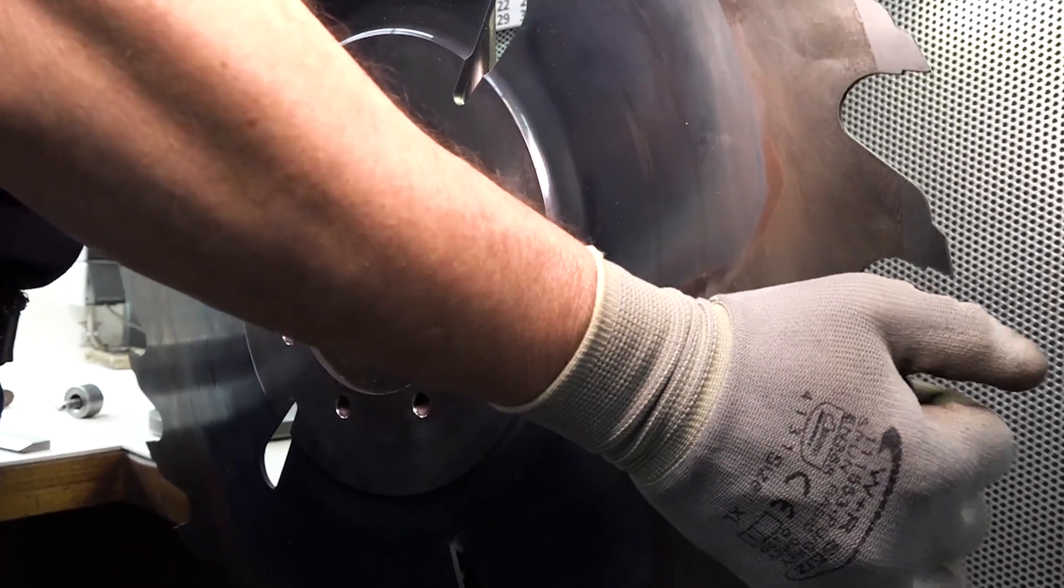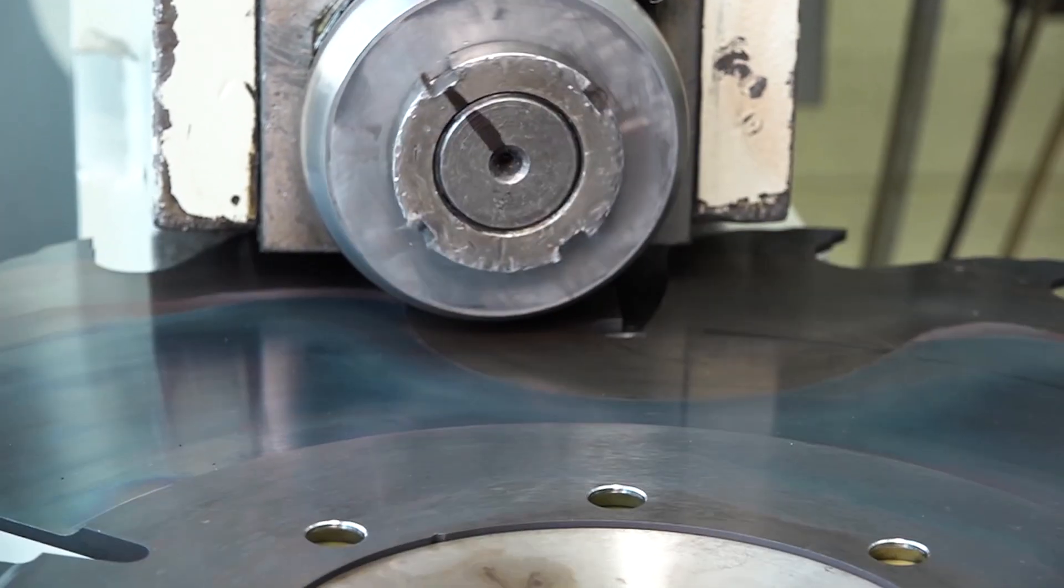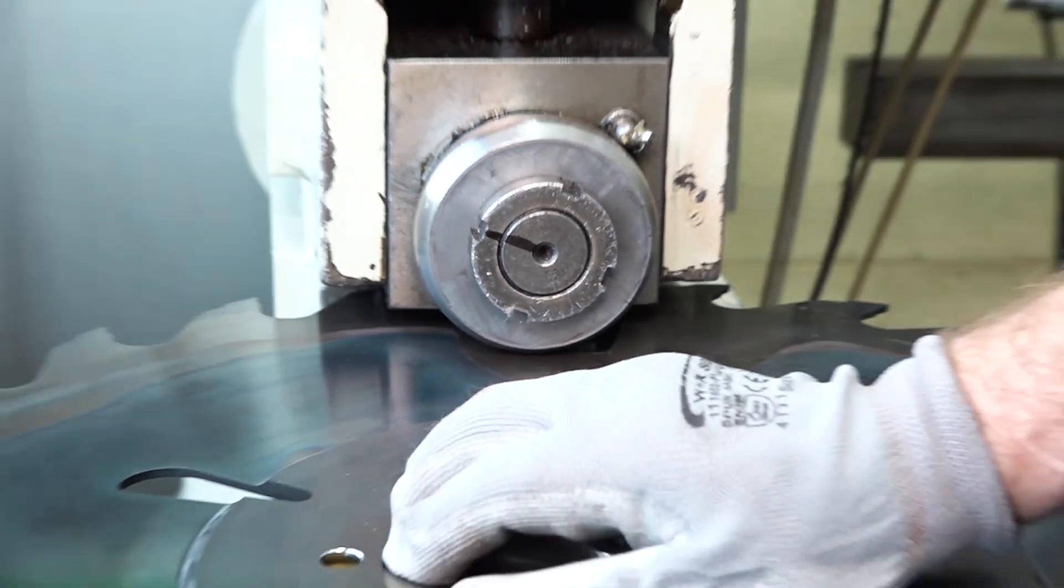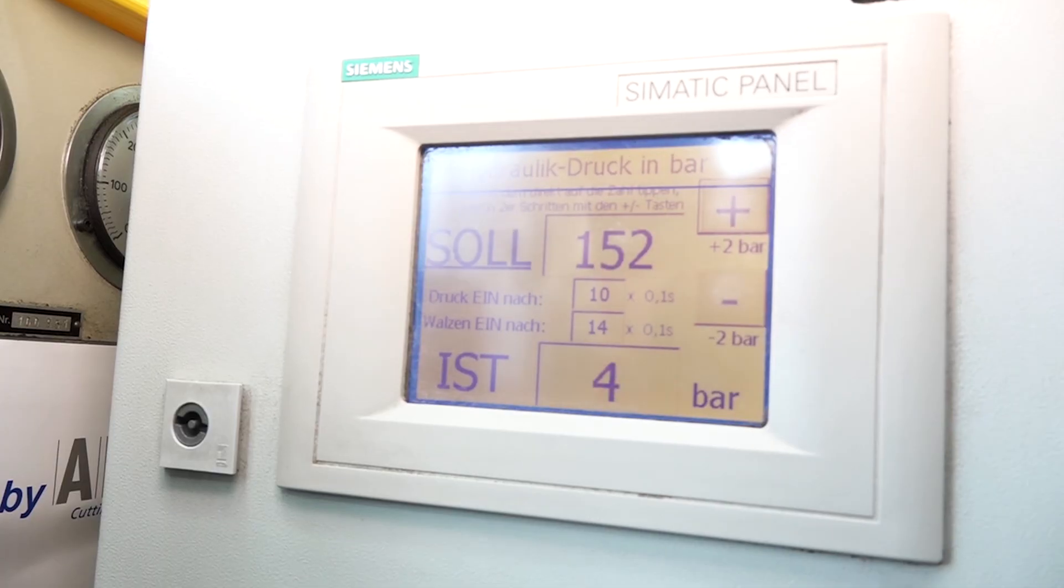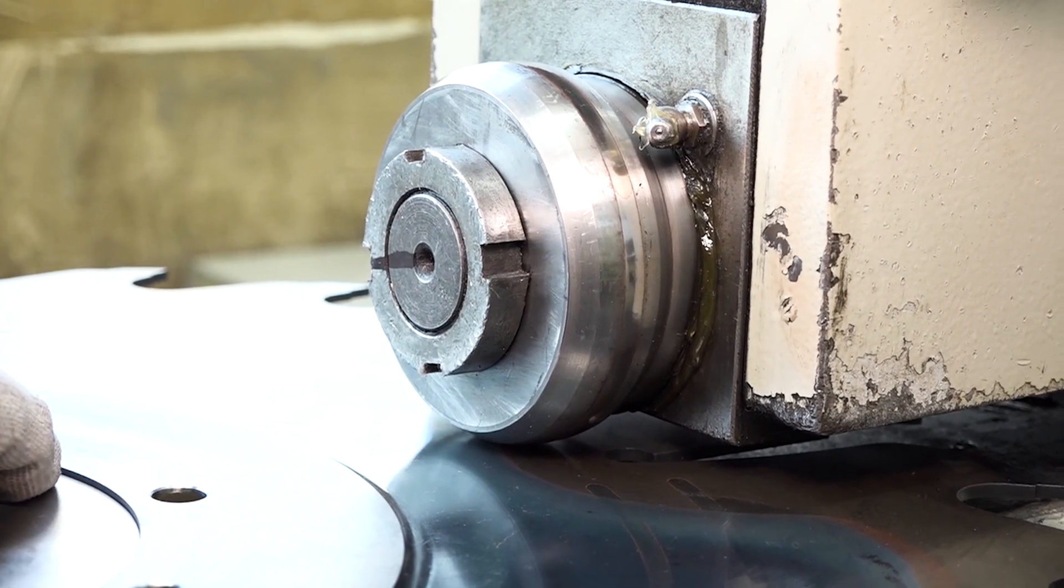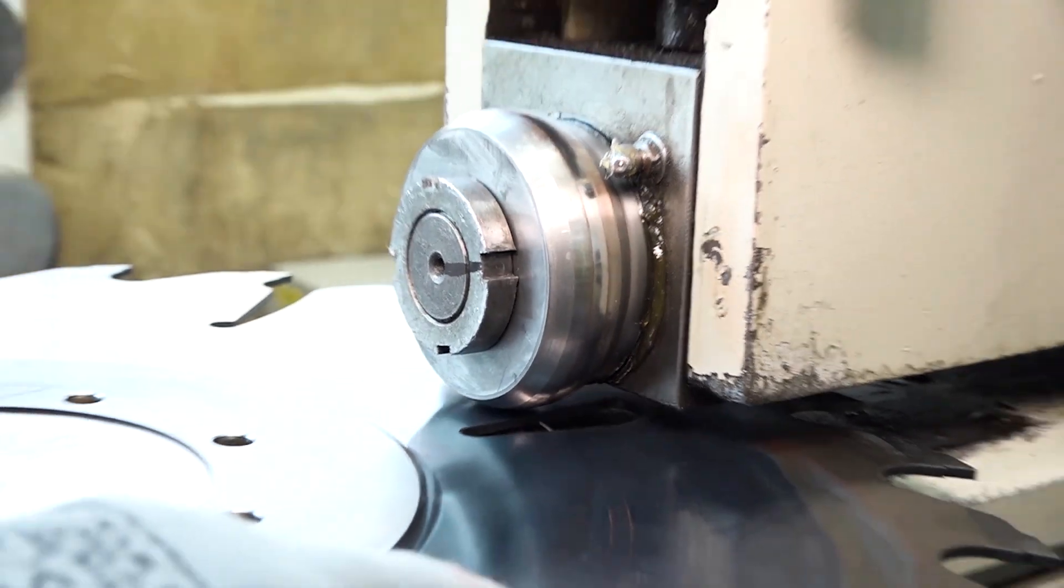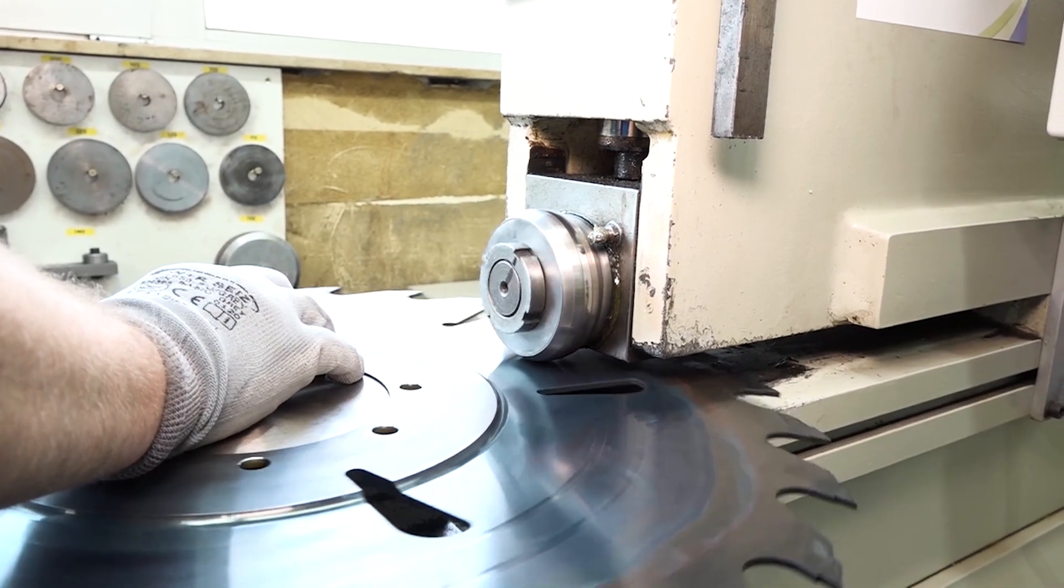When the circular saw blade hits the tree trunk, it rotates at a speed of about 3,000 revolutions per minute. Enormous centrifugal and cutting forces are at work. The targeted application of compressive stresses allows the tool to run stably despite these loads and to produce the desired board quality.